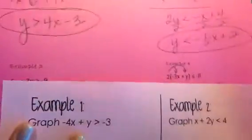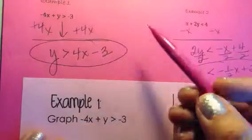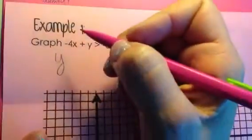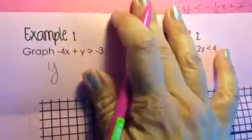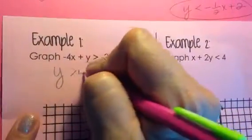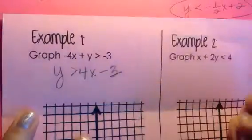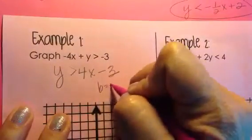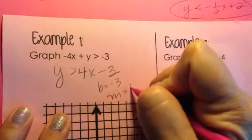So the very first thing that I'm going to do is I'm going to go grab my example 1. As you can see, it's the exact same inequality. When we solved it for y, we wrote it as y is greater than 4x minus 3 by using strategies to rearrange. What we find out then is the b value is negative 3 and our slope is 4.